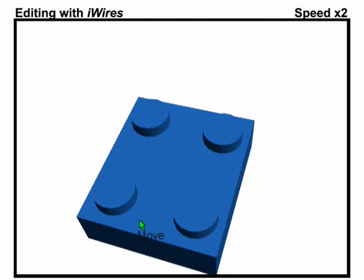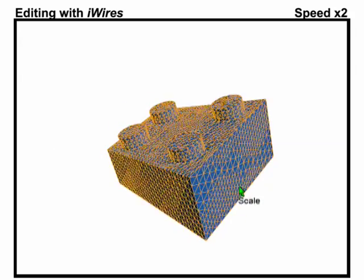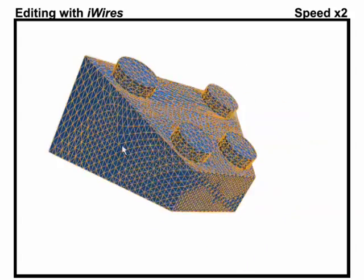We take an analyze and edit approach where, prior to editing, we perform a lightweight analysis of the input shape to extract a few descriptive features, termed I-wires.